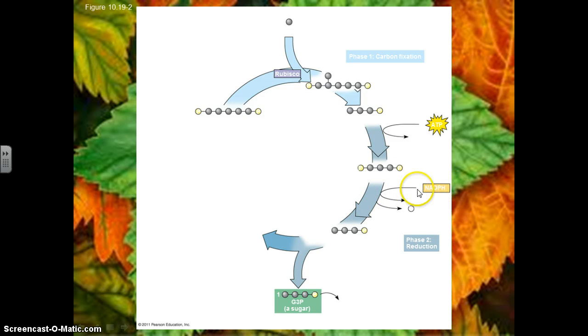NADPH drops off a hydrogen, so hydrogen is now involved here, and it also pulls off another phosphate, and so it becomes NADP+. The NADP plus and the ADP are going to go back to the light reactions and get recycled once again. The molecule, through a number of different enzymes, is going to get rearranged and rearranged, and one of those molecules is going to get kicked out, and it's called G3P.